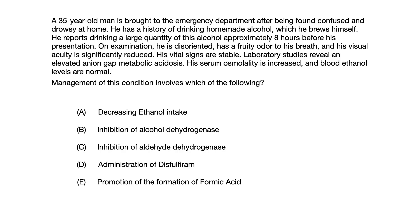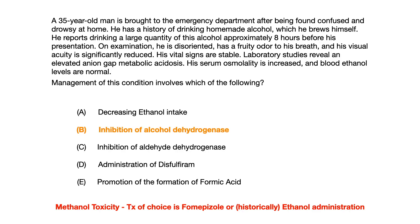Pause the video if you want some time to think about this. The correct answer to this question is choice B, inhibition of alcohol dehydrogenase. The question is describing a patient with methanol toxicity. When you have a patient with methanol toxicity, the initial treatment of choice is fomepizole.